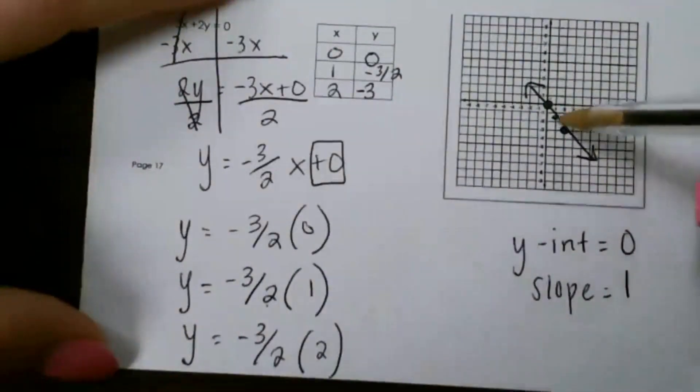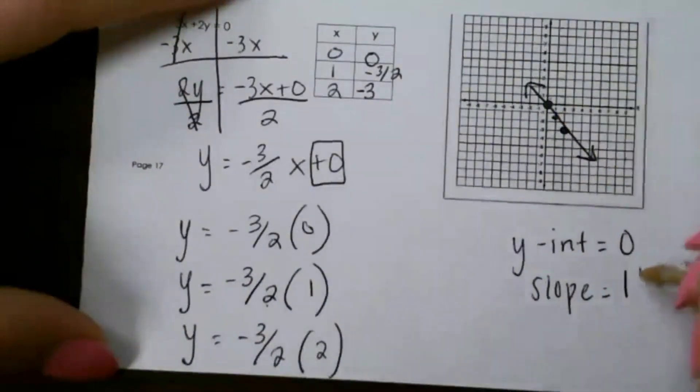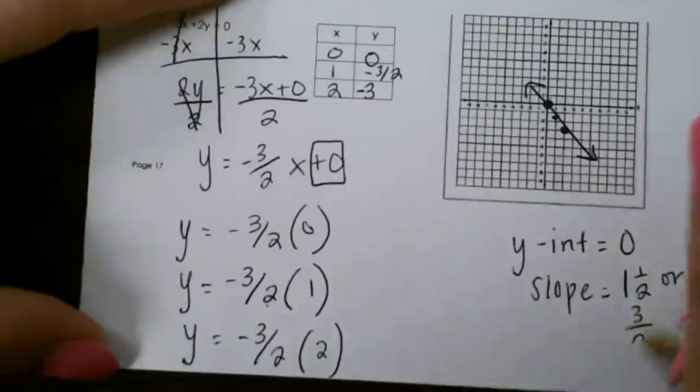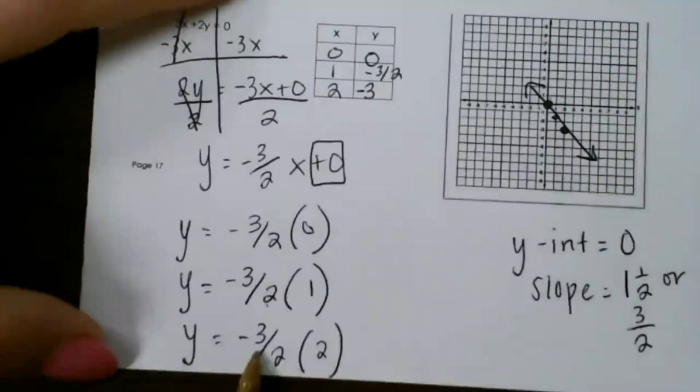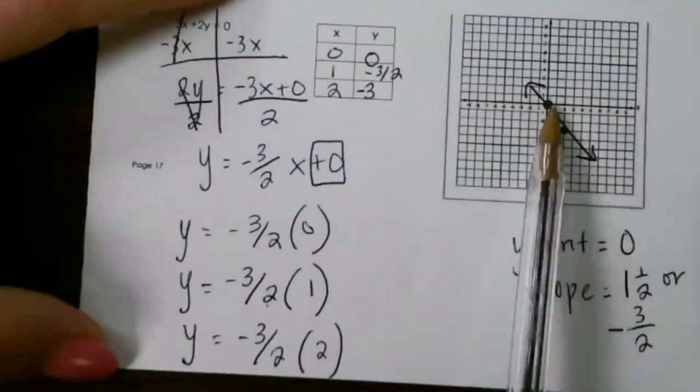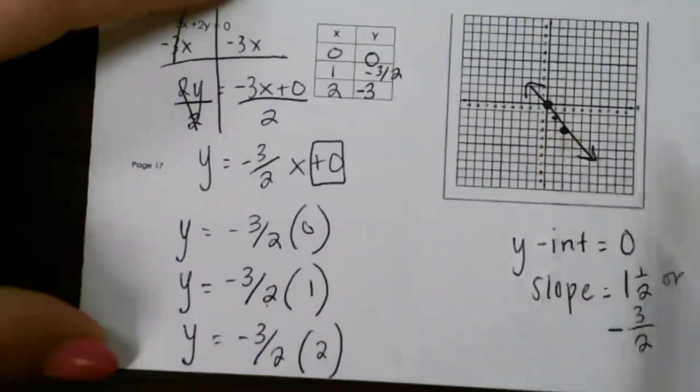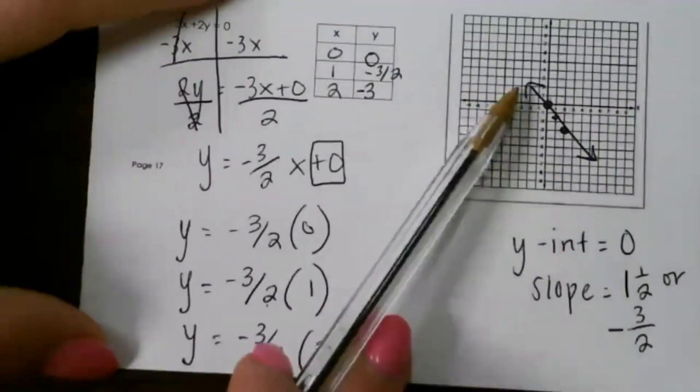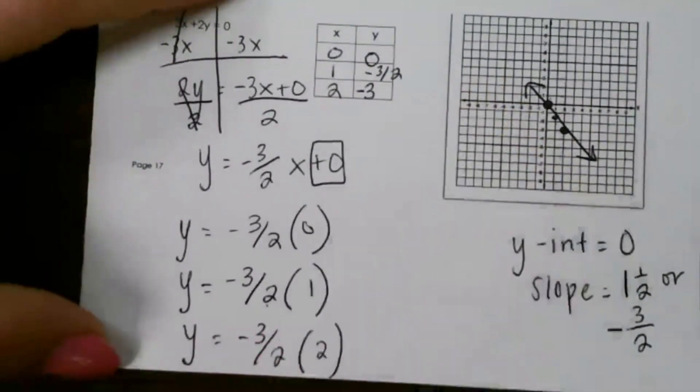So we have to remember that this one was at 3 halves. So that would be 1 and a half or 3 halves like we had in our equation. And remember that it's negative because any time you go up and then left or down and then right, that's a negative. And also you can tell that it's a negative because our line is going downhill.